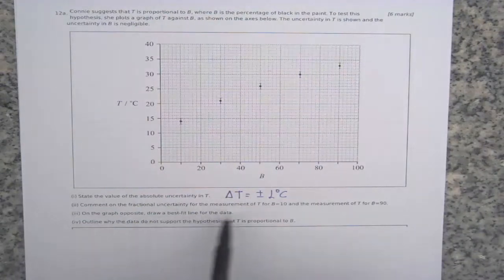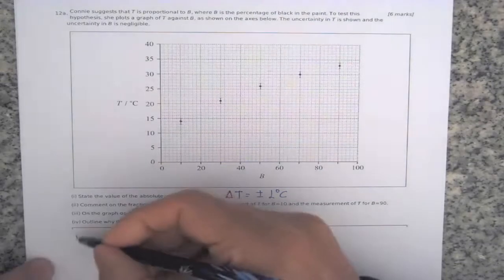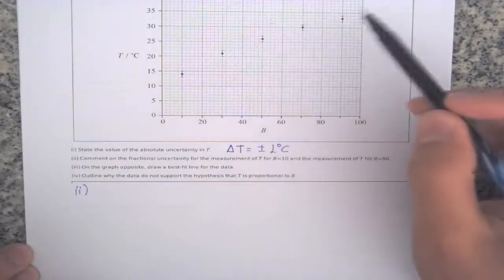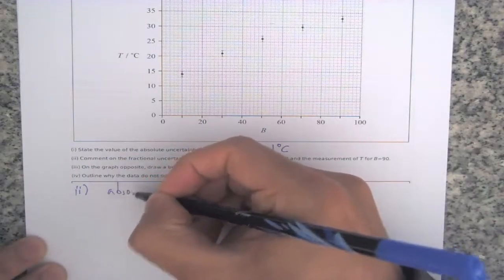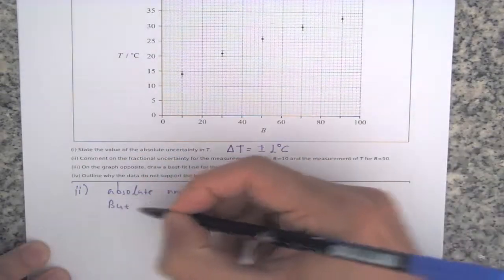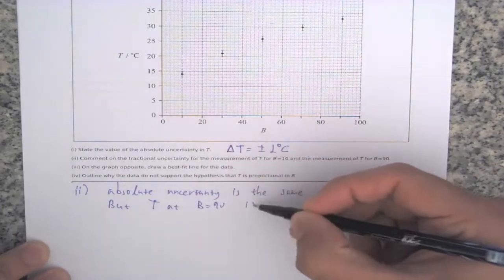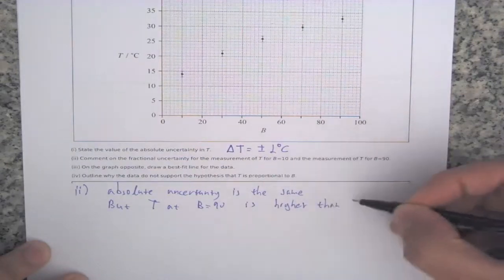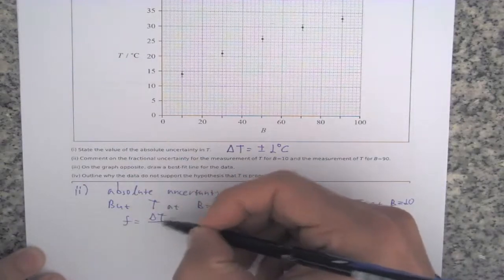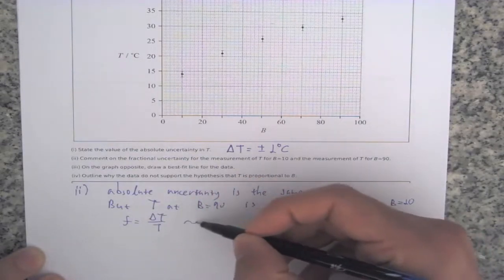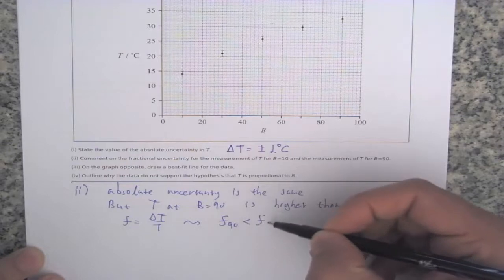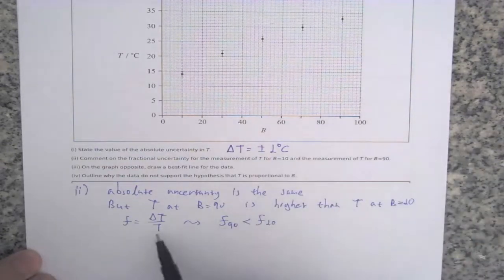Comment on the fractional uncertainty for the measurement of T at B equals 10 and at B equals 90. The absolute uncertainties are the same — you can see them on the graph at each point. But the temperature at B equals 90 is higher than the temperature at B equals 10. Since fractional uncertainty is the absolute uncertainty divided by the value, the fractional uncertainty at B equals 90 is smaller than at B equals 10, because you have a bigger value at 90.